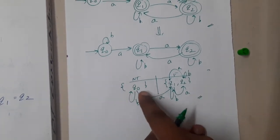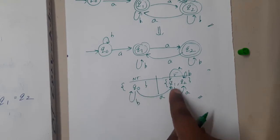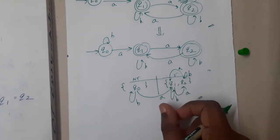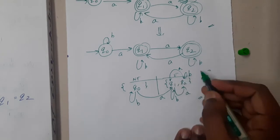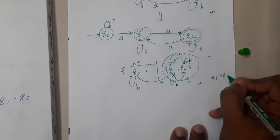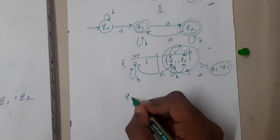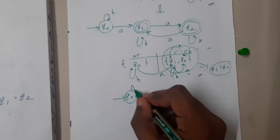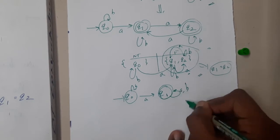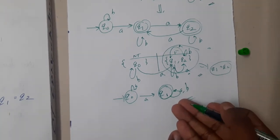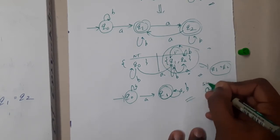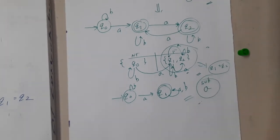The non-final state q0 goes to non-final on one input and final on the other. But when checking q1 and q2, both are acting the same — they map to themselves on 'b' and to the other final state on 'a'. So we can conclude q1 equals q2. Now replacing q2 by q1, the final minimized diagram is: q0 on 'a' goes to q1, on 'b' self loop; q1 is the final state with self loop on both 'a' and 'b'. This represents strings containing the substring 'a'.